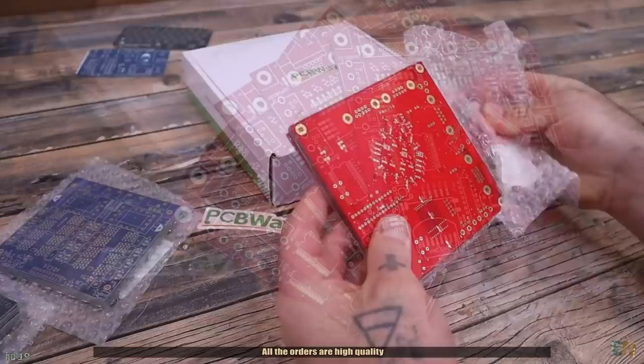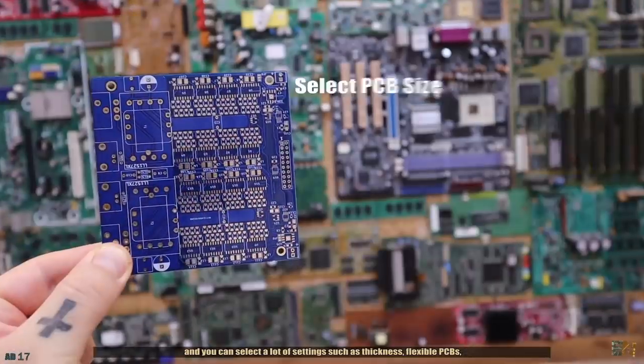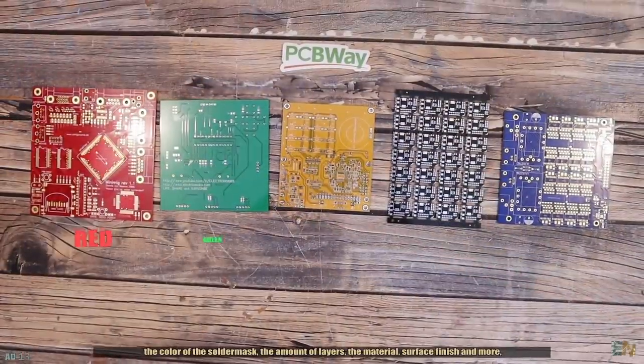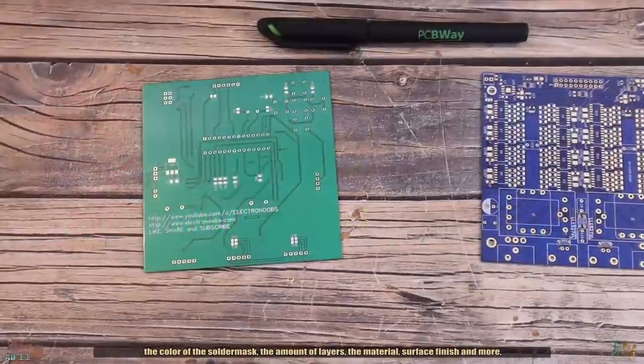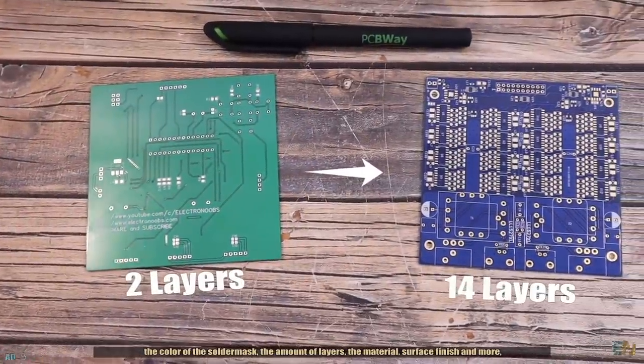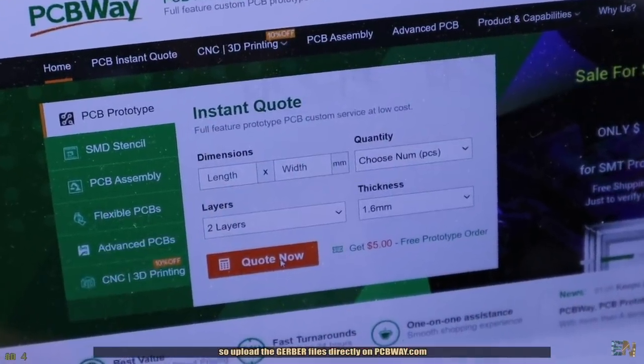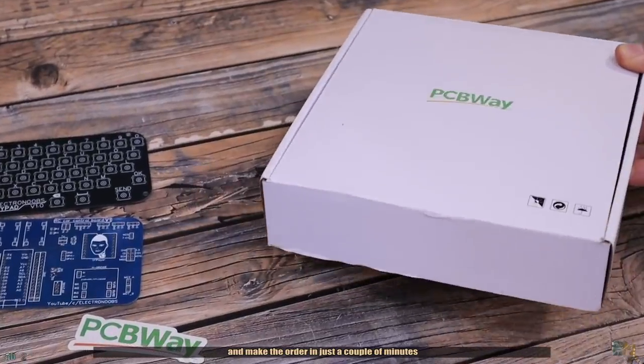All the orders are high quality and you could select a lot of settings, such as the thickness, flexible PCBs, the color of the solder mask, the amount of layers, the material, the surface finish and more. So upload the Gerber files directly on PCBWay.com and make the order in just a couple of minutes.